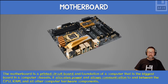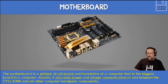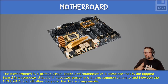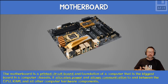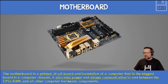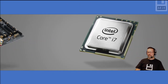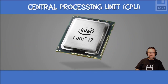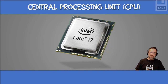The motherboard is a printed circuit board — that's important to know. And it allocates power and allows communication to and between the CPU, the RAM, and all the other hardware components. That's the paraphrase version. Next thing that we have: a central processing unit, a CPU.